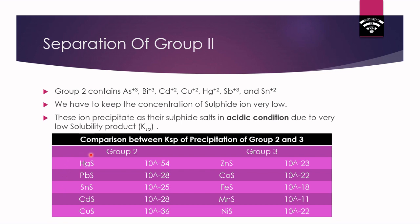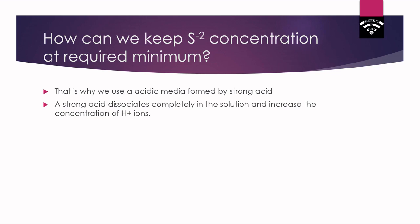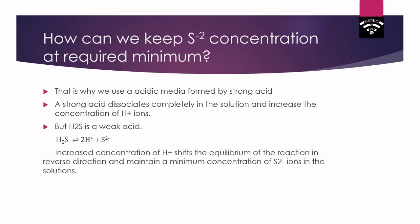If you look at the Ksp of Group 3 cations, it is a little bit higher. The lowest Ksp of a Group 3 cation is about 10 to the power minus 23, while the highest Ksp of Group 2 is about 10 to the power minus 25 — roughly a hundred times difference. That is why we must keep the sulfide ion concentration very low; otherwise, we may also get precipitation of Group 3 cations, which will lead to wrong results.